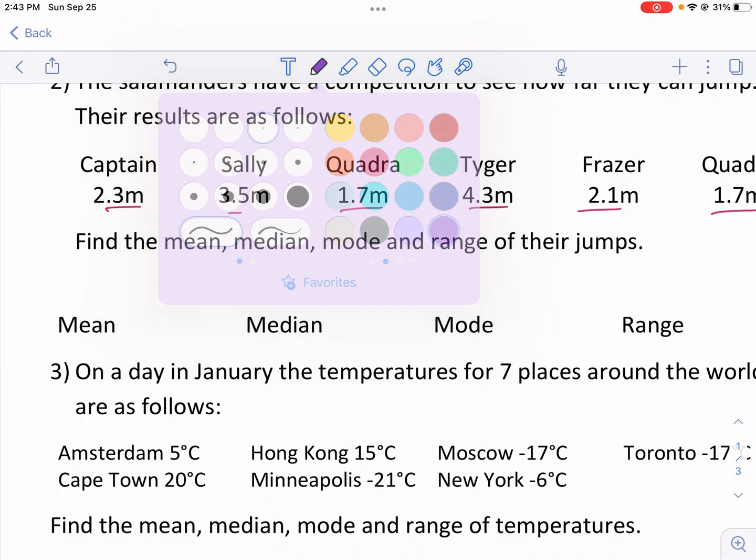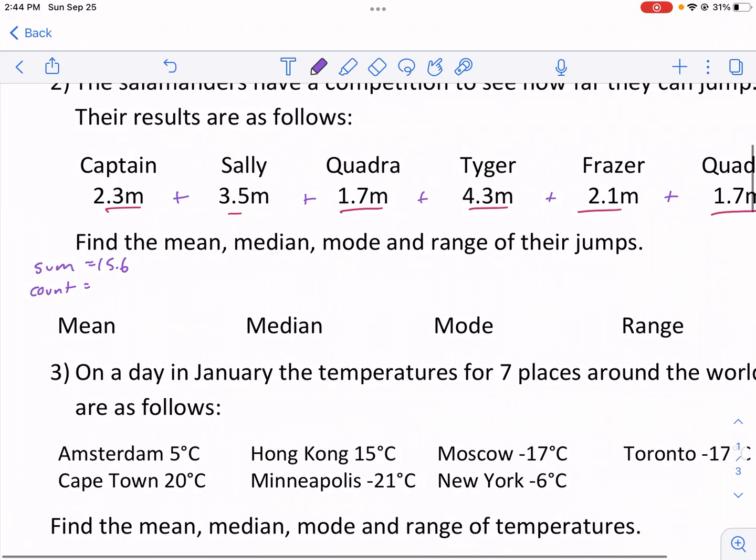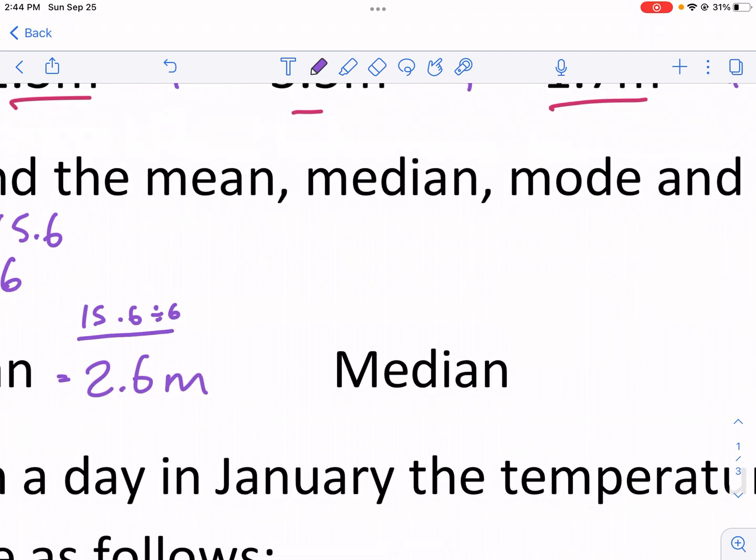Let's start with the mean. The mean is first we need to find the sum of these numbers. So 2.3 plus 3.5 plus 1.7 plus 4.3 plus 2.1 plus 1.7. When I get my sum, I get 15.6. My count is 6. So I need 15.6 divided by 6 and I get 2.6. So my mean is 2.6 meters.